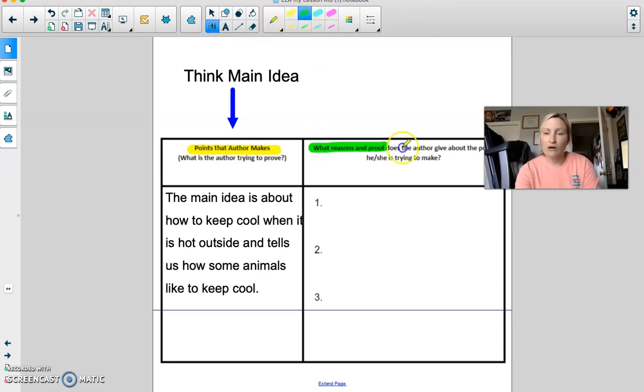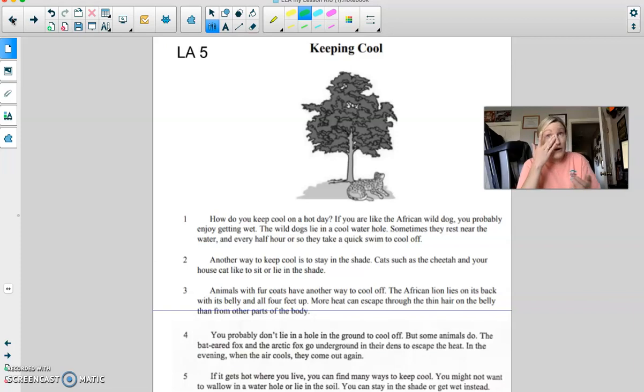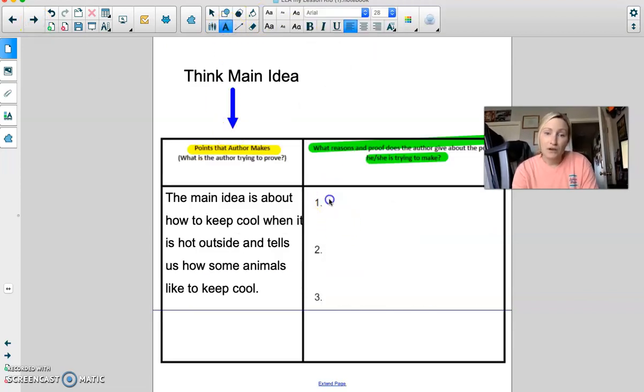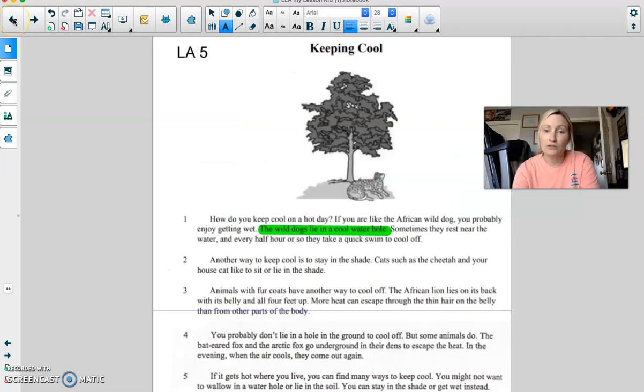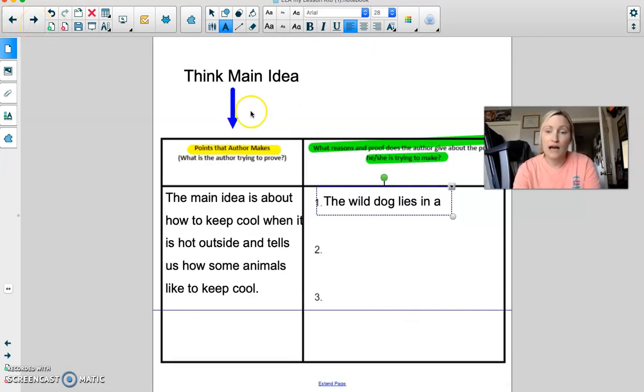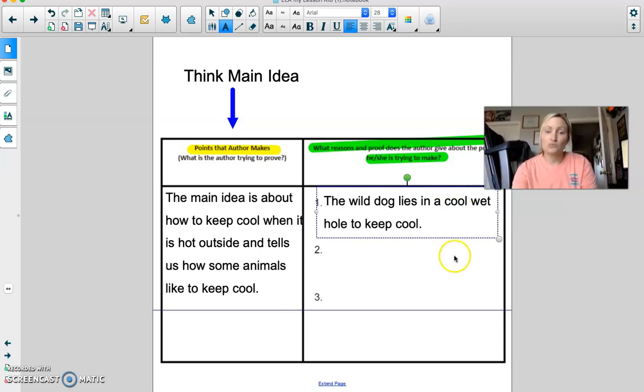So, this is where I'll look at now. Go back and look. Okay. So, right here. What are some ways that some of these animals are keeping cool? Look right here. The wild dog lies in a cool water hole. So, this helps them to cool off. So, I would come back over here. And I would put the wild dog lies in a - remember, you can go back and look - lies in a cool water hole to keep cool.